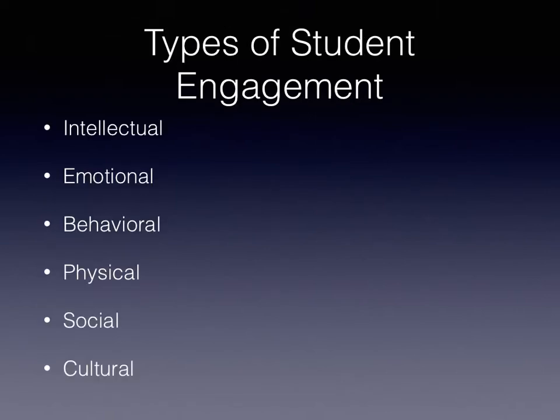There are different types of student engagement that we don't probably think about. There's intellectual and academic engagement that we can observe. There's definitely emotional, behavioral, and physical — such as when students are actually moving and participating in an activity. We can also gauge social engagement as well as cultural and diverse engagement.